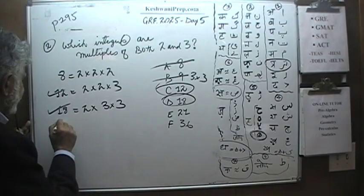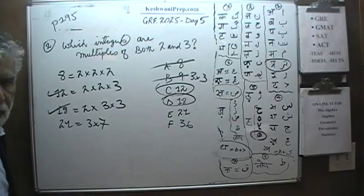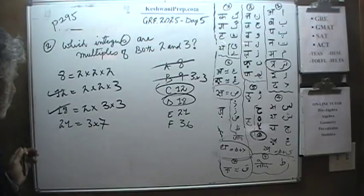What about 21? 21 is a product of 3 and 7. The 2 prime factors of 21 are 3 and 7, not 2 and 3. That doesn't work.